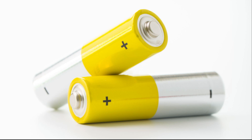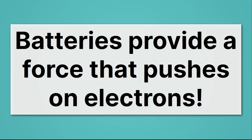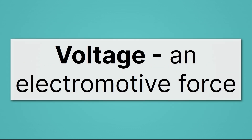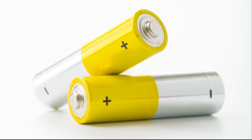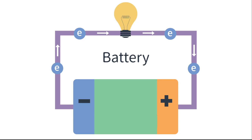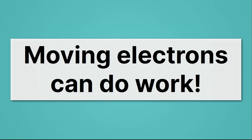We can take advantage of the freedom of these electrons to move, but give them some orientation and direction with a battery. If we hook up wires to a battery, the battery pushes electrons in one particular direction. So batteries provide a force that pushes on electrons — we call this force voltage. It's an electromotive force. In a circuit, it will drive electrons through a wire, and in this case through a lightbulb, and light it up. Moving electrons can do work, like lighting a lightbulb.